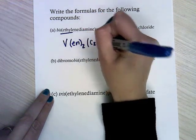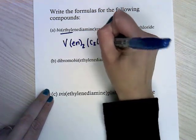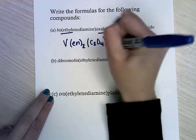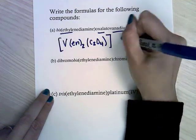And then oxalato is the oxalate anion, which we don't use very often, but C2O4. That all goes in brackets, chlorine on the outside.